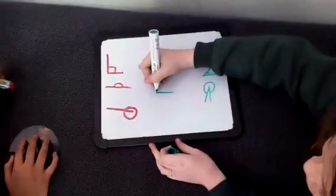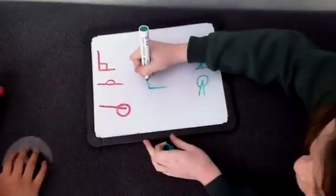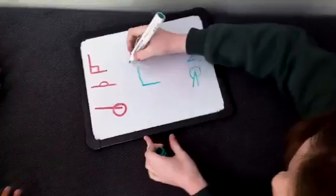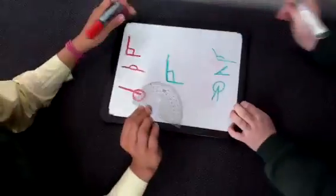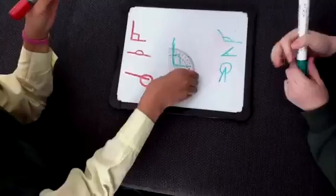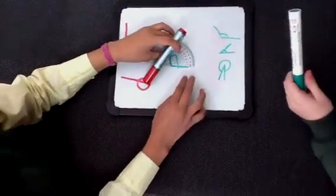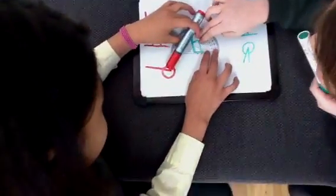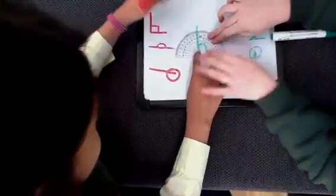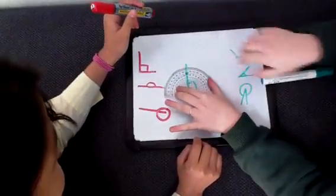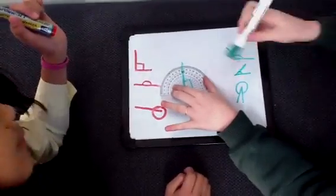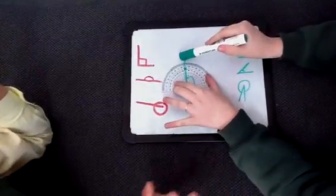I'm going to put the protractor on it. You line it up with it. And a right angle is 90 degrees.